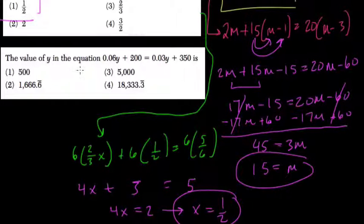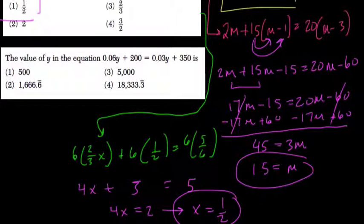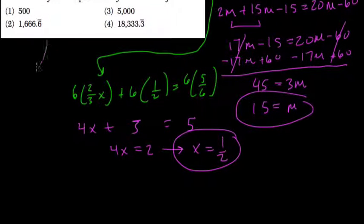The value of y in this equation is, okay so let's define the value of y. Let's do that. 0.06y plus 200 equals 0.03y plus 350.